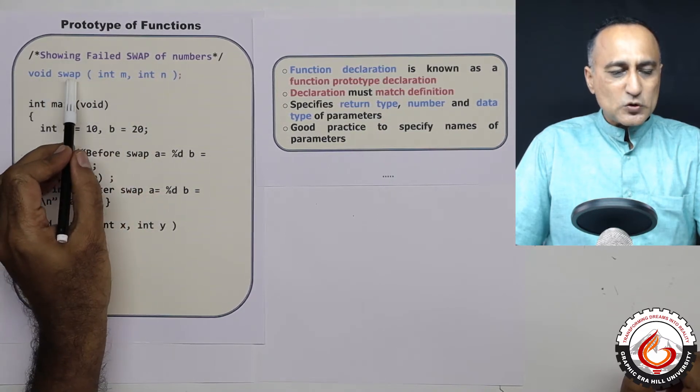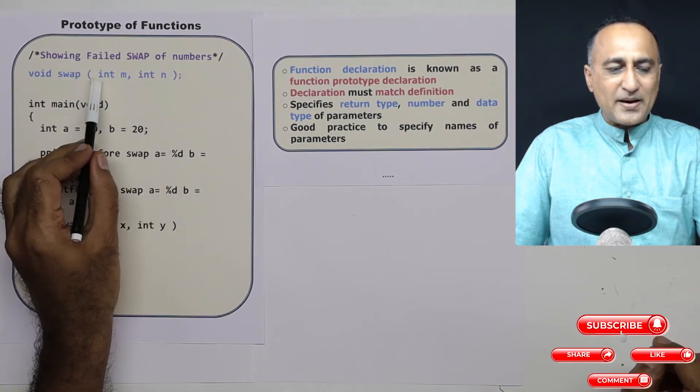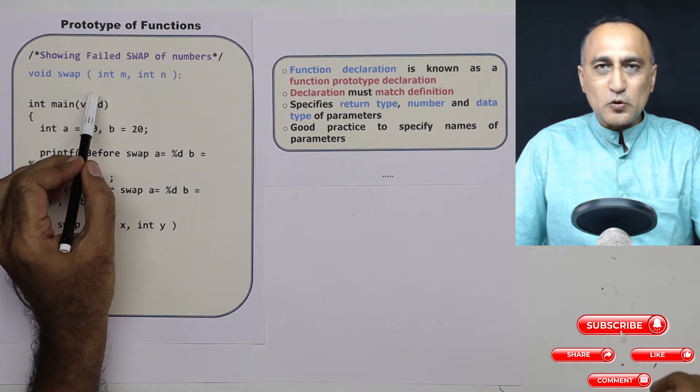So this void swap int m int n ending with a semicolon and the bracket constitutes the signature or function prototype.